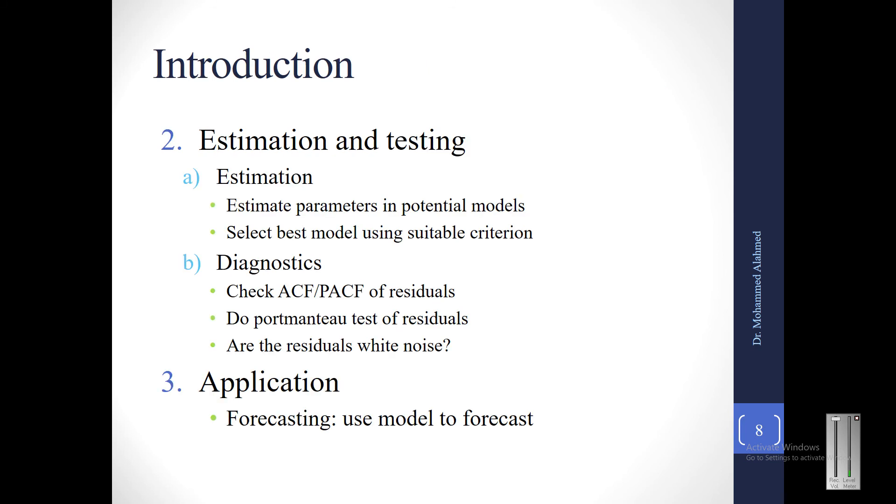Second is estimation. Estimation means you need to estimate the parameters in the potential model. For example, ARIMA has three parameters, P, D, and Q. We check for the various values of these models and select the best model using suitable criteria. One of the criteria here which we normally use is the AIC criteria, which we will see later in more details. The lower the value of AIC, the better the model is.